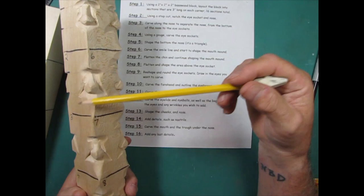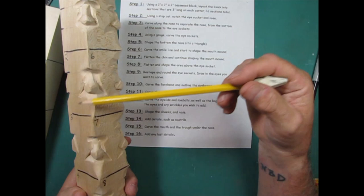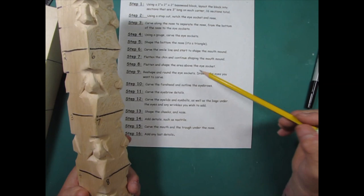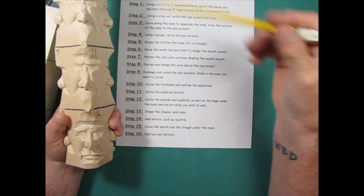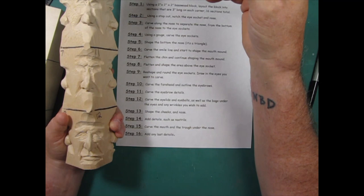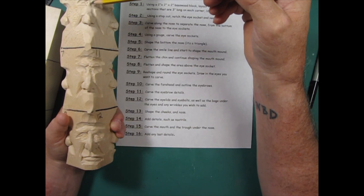Step number six, carve the smile line and start to shape the mouth mound. Number seven, we flatten the chin a little bit and shape the area above and continue shaping the mouth mound. Number eight, we flatten and shape the area above the eye socket. Number nine, we're reshaping around the eye sockets and then we'll draw in the eyes that you want to carve, whatever they are - squinting, wide open, whatever. Number ten, we'll carve the forehead and outline the eyebrows.